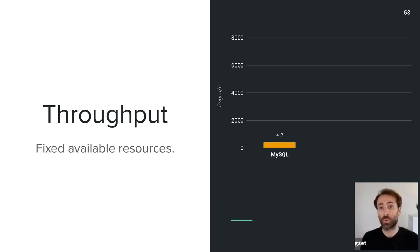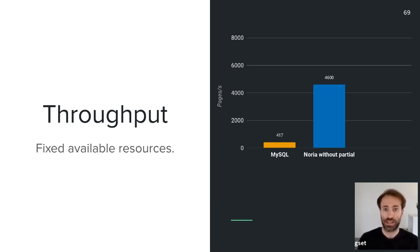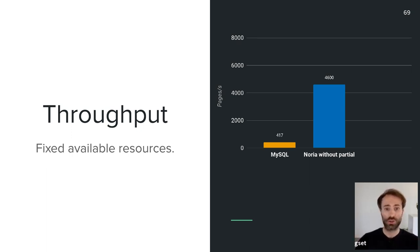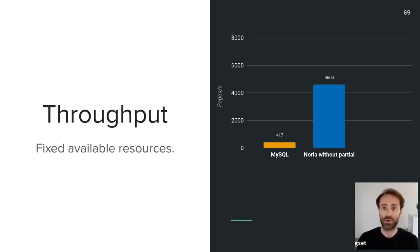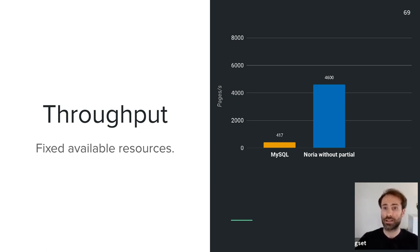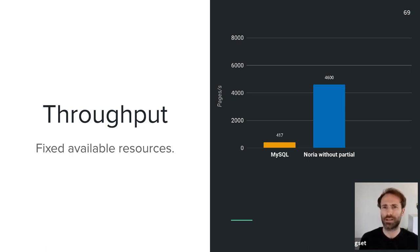Noria without partial state does significantly better — about an order of magnitude improvement, reaching ~4,500 pages per second. This shows the power of materialized views: the majority of reads don't have to do joins and are essentially key-value lookups. However, Noria without partial state hits a memory bottleneck rather than a CPU one — it runs out of the 128 GB of memory on the machine, and memory use tends to increase over time.